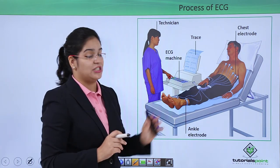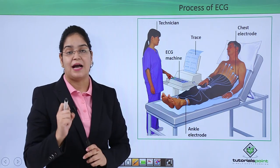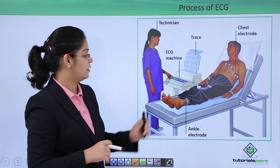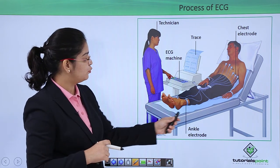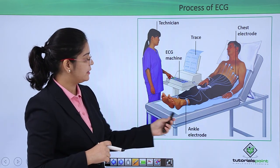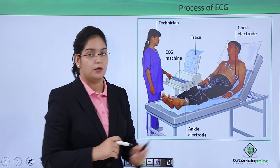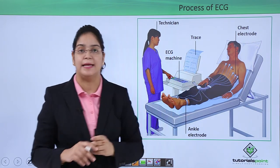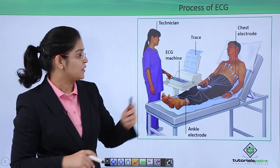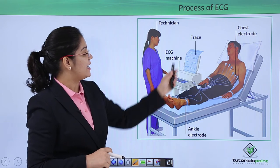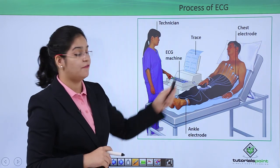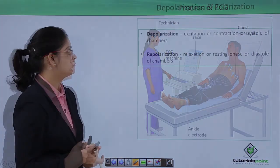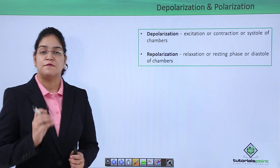In the process of ECG there are six main leads or electrodes: two we use in the legs, two on the hands, and two main chest electrodes. This is the ECG machine having a graph which is recording the impulses.